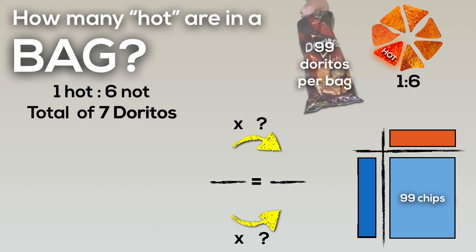Since we're dealing with the total number of chips in a bag, we now have to consider that that ratio gives us a total of seven chips. One hot for every six not is seven chips in total. So if we're dealing with the total number in the bag, we do need to keep in mind that seven Doritos is what we're going to be working with, not one or six.